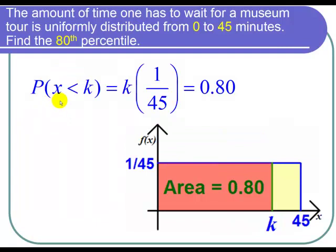We can say that the probability that x is less than k. First, we can say it's the area of the rectangle, which is the base, which is k, times the height, which is 1 over 45.